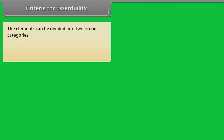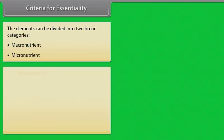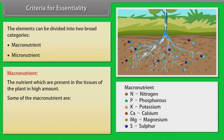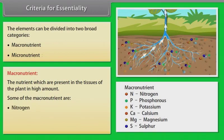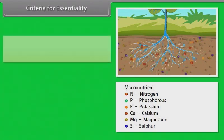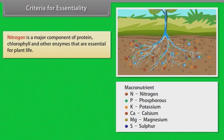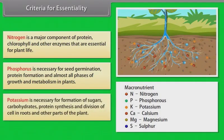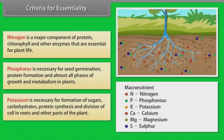The elements can be divided into two broad categories: Macronutrients and Micronutrients. Macronutrients are nutrients which are present in the tissues of the plant in high amounts. Some of the macronutrients are Nitrogen, Phosphorus, and Potassium. Nitrogen is a major component of protein, chlorophyll and other enzymes essential for plant life. Phosphorus is necessary for seed germination, protein formation and almost all phases of growth and metabolism in plants. Potassium is necessary for formation of sugars, carbohydrates, protein synthesis and division of cells in roots and other parts of the plant.